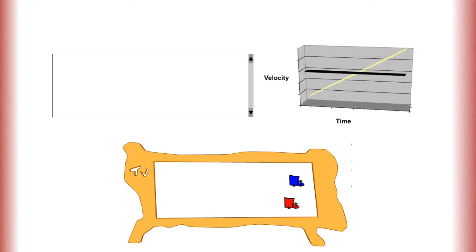Based on the graph below, which line represents the blue truck and which line represents the red truck? The yellow line represents the blue truck. Its velocity increases over time.